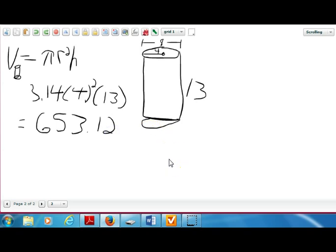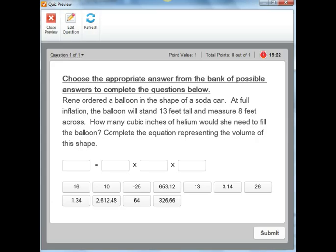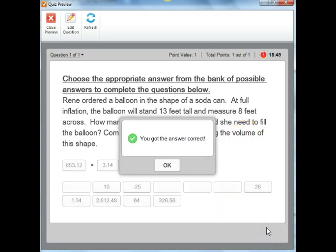So now that's our volume. Now let me go back to our practice question. So from our whiteboard work we already know that the volume of that figure is 653.12. We know that the radius which goes in that first position is 3.14. We know that half the diameter of 8 was 4 and 4 squared, 4 times 4 we know is 16. So we're going to plug that in there. And then we know the height of that balloon is going to stand 13 feet tall. So now we have completed the equation representing the volume of this shape, and we would submit our answer. And it would simply tell us that we got our answer correct.